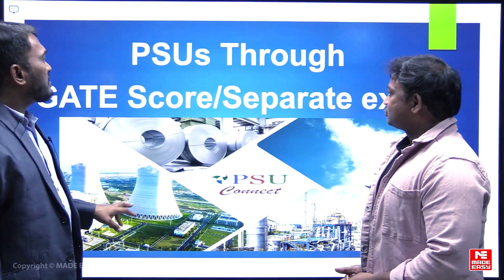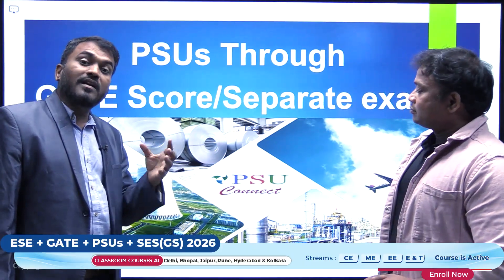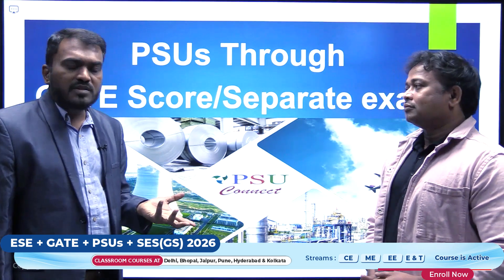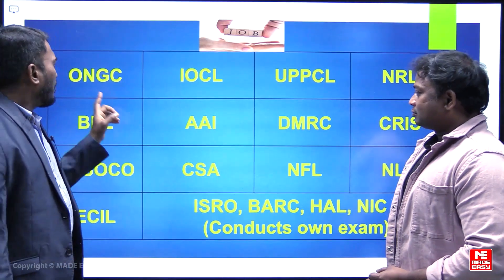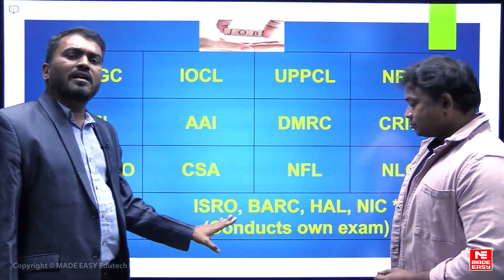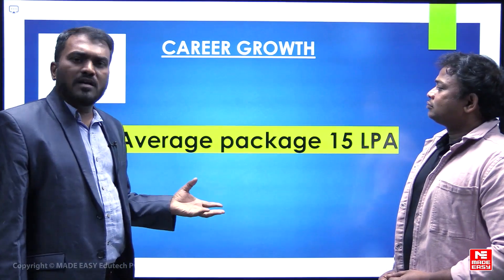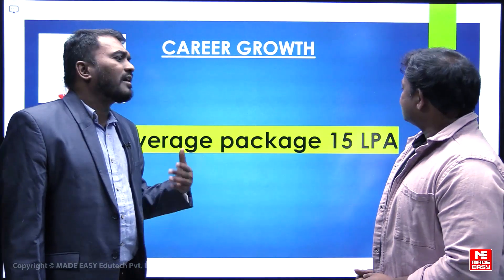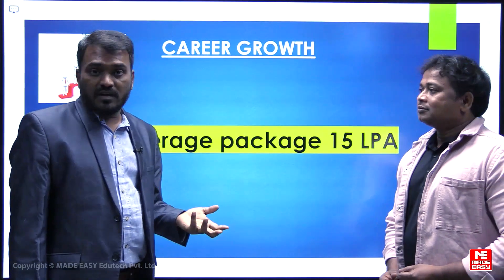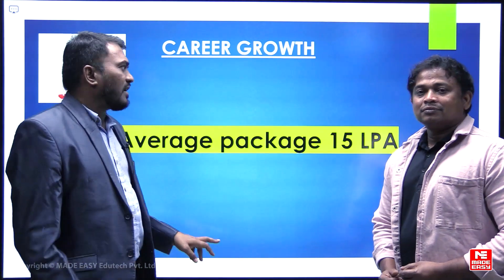Other reputed colleges that conduct separate exams with similar syllabi include DTU Delhi, Jadavpur University Kolkata, VAIT Vellore, College of Engineering Pune, ISI Kolkata, and JNU Delhi — average package around 12 lakhs per annum. For PSUs, some directly recruit through GATE score while others conduct separate exams. Popular PSUs include ONGC, IOCL, ISRO, and BARC. IOCL offers around 19 lakhs, ONGC around 22 lakhs, with an average of about 15 lakhs per annum.